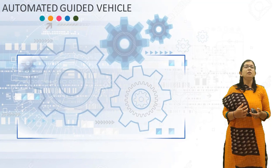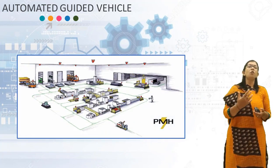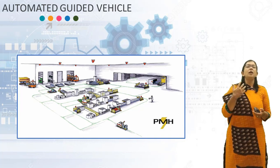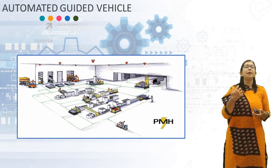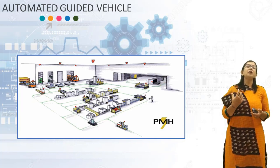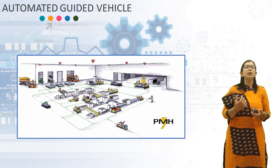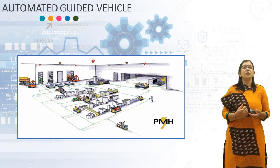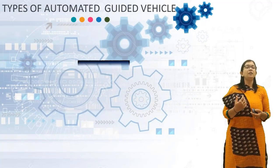Here you can see how different kinds of Automated Guided Vehicles transfer material on the shop floor. There are several kinds of Automated Guided Vehicles used in Flexible Manufacturing System. Now we will discuss the types of Automated Guided Vehicles.